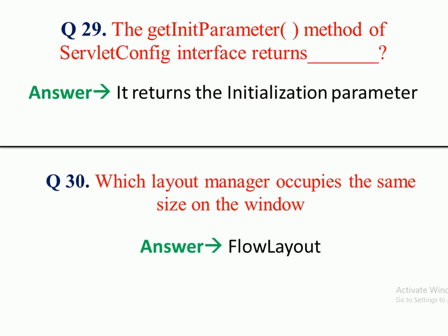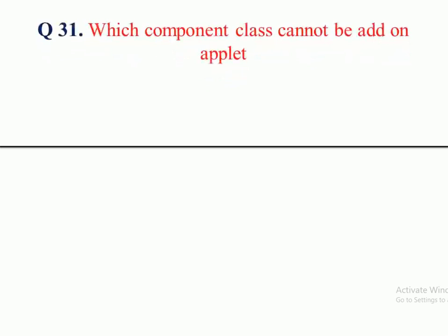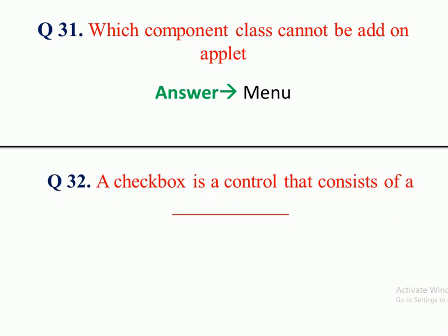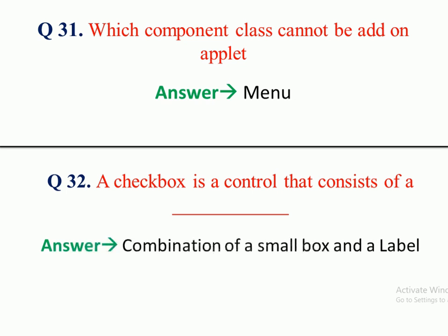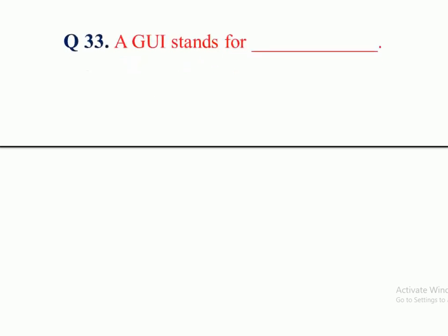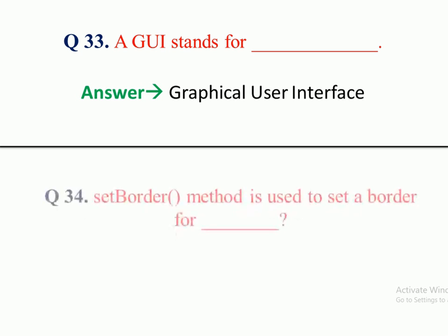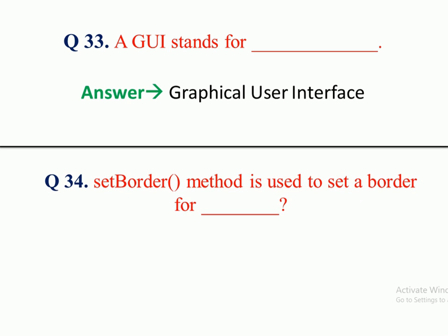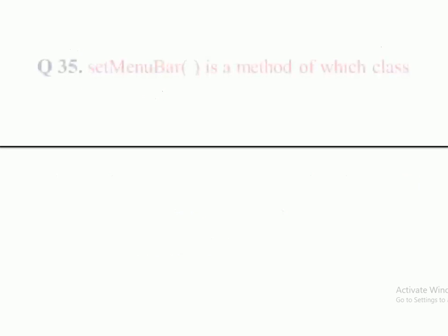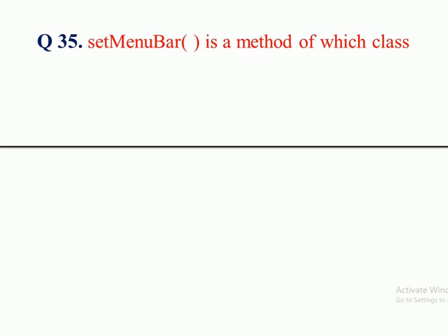Question 30: Which layout manager occupies the same size on the window? Answer: FlowLayout manager. Question 31: Which component class cannot be added on an applet? Answer: Menu. Question 32: A checkbox is a control that consists of a combination of a small box and a label. Question 33: GUI stands for Graphical User Interface. Question 34: setBorder method is used to set a border for which class? Answer: JComponent. Question 35: setMenuBar method is a method of which class? Answer: Frame class.